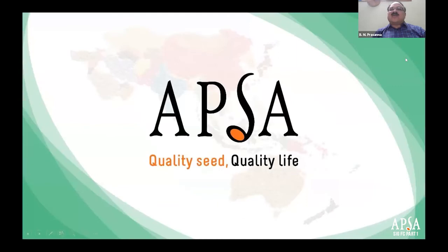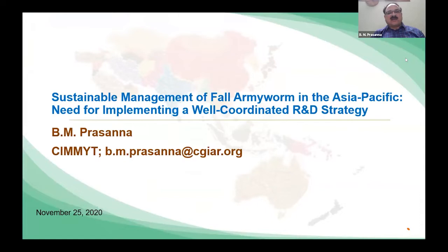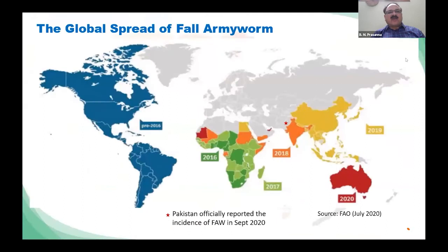Thank you very much Dr. Frisco for this introduction — it's a great pleasure to participate once again in the Asia-Pacific Seed Congress. Many thanks to the organizers for giving me this opportunity to talk on this virtual platform. We are going through a challenging time on multiple fronts. COVID-19 is one amongst the major ones, but for maize crops in the Asia-Pacific there is another big challenge: the Fall Armyworm. This pest is not new — it has been present for several decades in the Americas. It entered Africa in 2015, officially reported in January 2016, then spread very rapidly to more than 40 countries across Africa. The pest came into Asia in May 2018, especially in southern India.